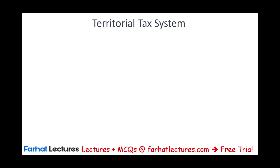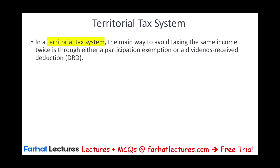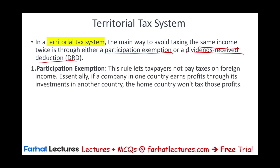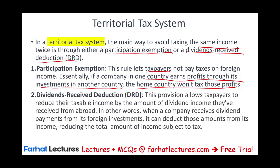The territorial tax system is the main way to avoid taxing the same income twice. You could either use participation exemption or a dividend received deduction. Under participation exemption, this rule lets the taxpayer not pay taxes on foreign income. Simply put, if a company in one country earns profit through its investment in another country, the home country won't tax it. For example, your company earned income in Australia, that income is taxed in Australia, and we're done — participation exemption.